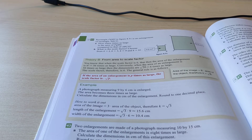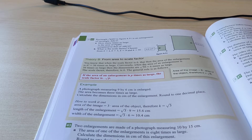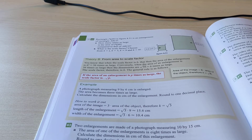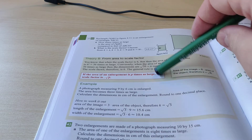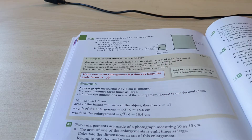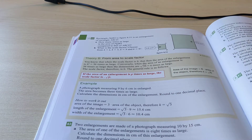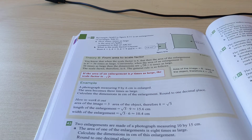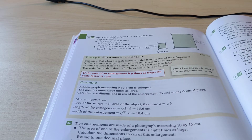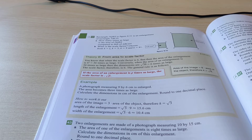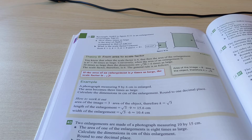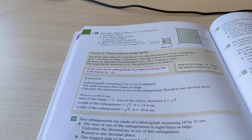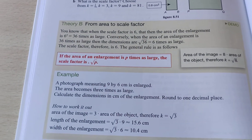There's another video of 2HT and 2VT about exercise 43 and also about Theory B, which says how to go from area to scale factor. So this explains, if you know the areas of the original and the enlargement, how you can calculate the scale factor. I'm also going to show you using an example. Let's take a look at what it says over here.